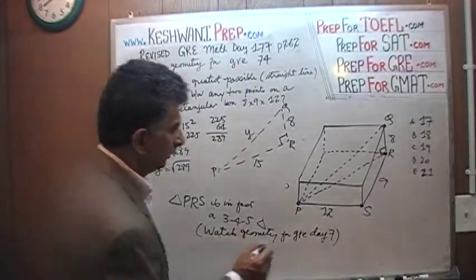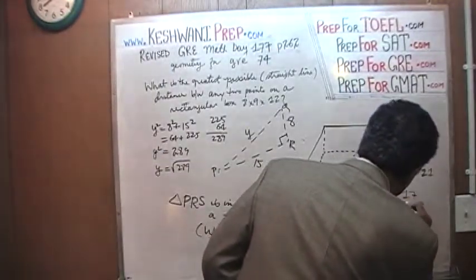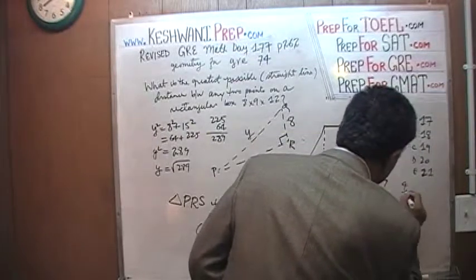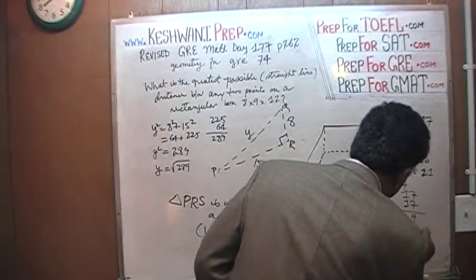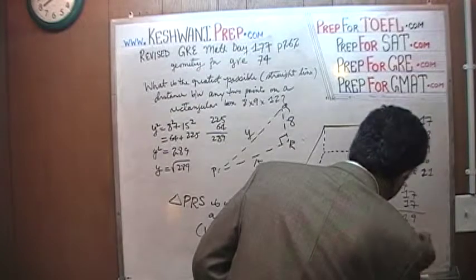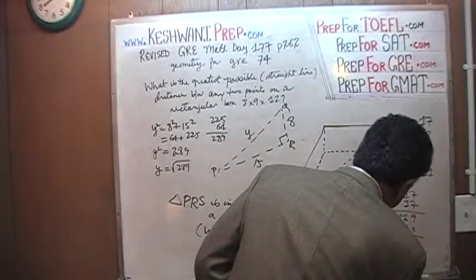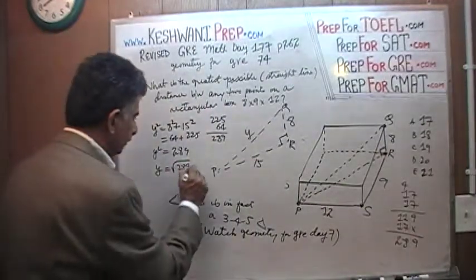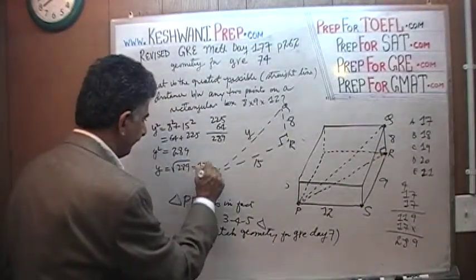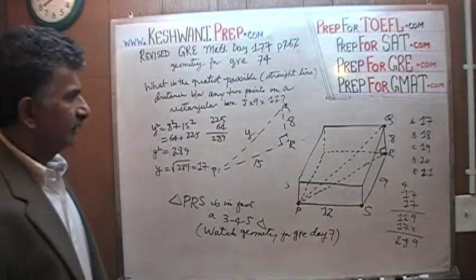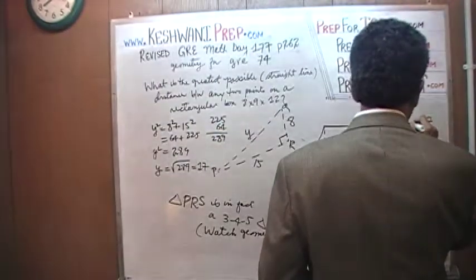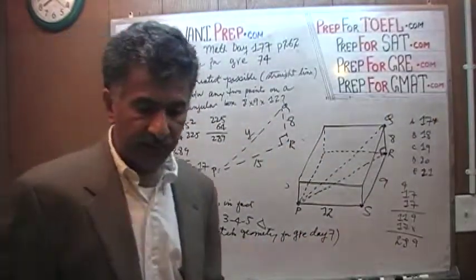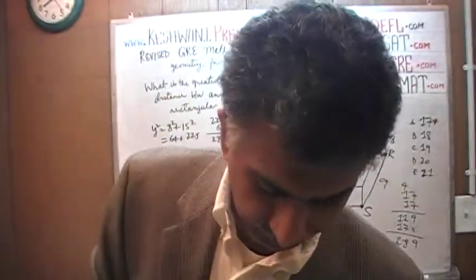Let's verify. 17 times 17: 7 times 7 is 49, carry 4, 7 plus 4 is 11, and then 17. What do you know? 289. So the square root of 289 is 17. That's the answer we find so far.